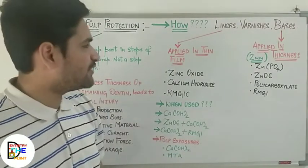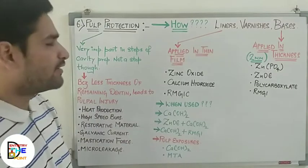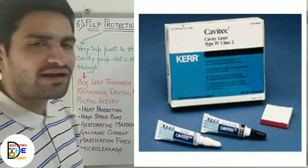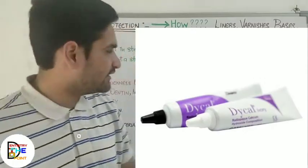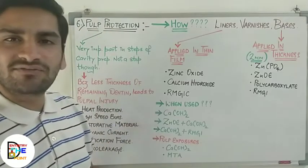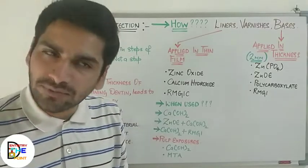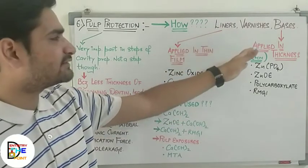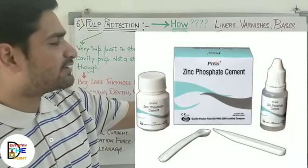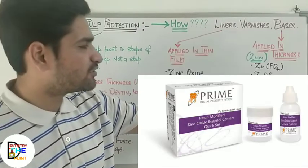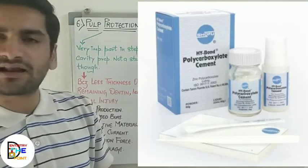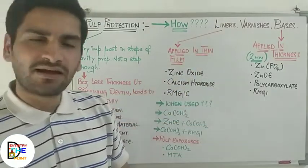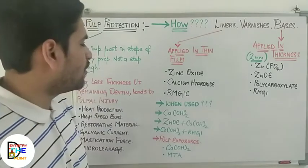The materials which can be used as liners include calcium hydroxide and resin modified GIC (resin modified glass ionomer cement), applied as a thin film. Materials used as bases include zinc phosphate, zinc oxide eugenol, polycarboxylate, and resin modified glass ionomer cement (RMGI).